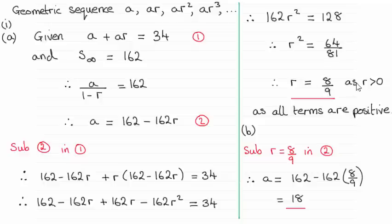But we know that the common ratio is a positive value so it's got to be greater than zero as all the terms have got to be positive. So therefore r has to be 8 ninths.